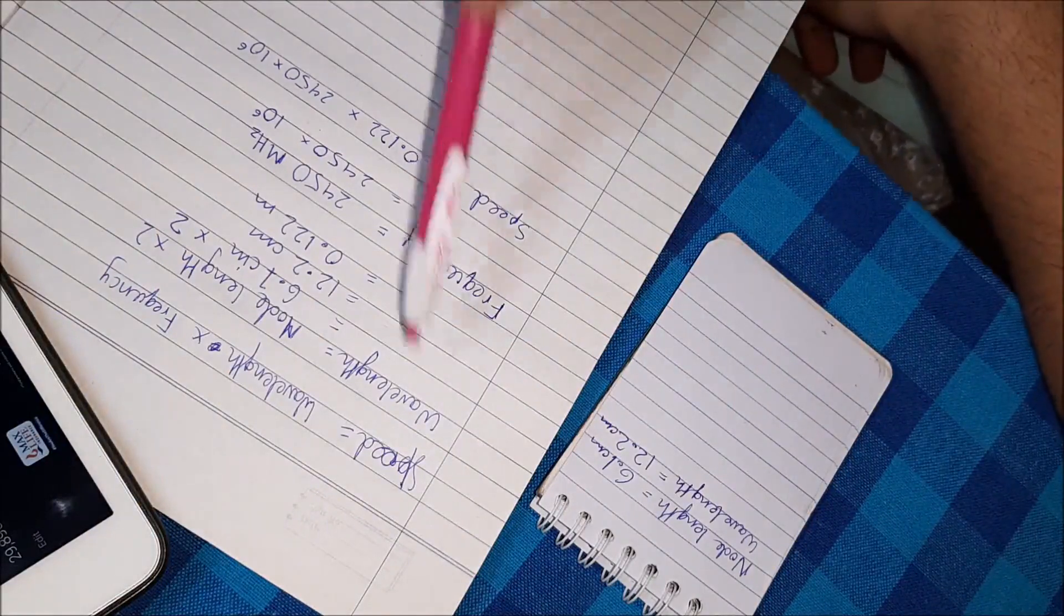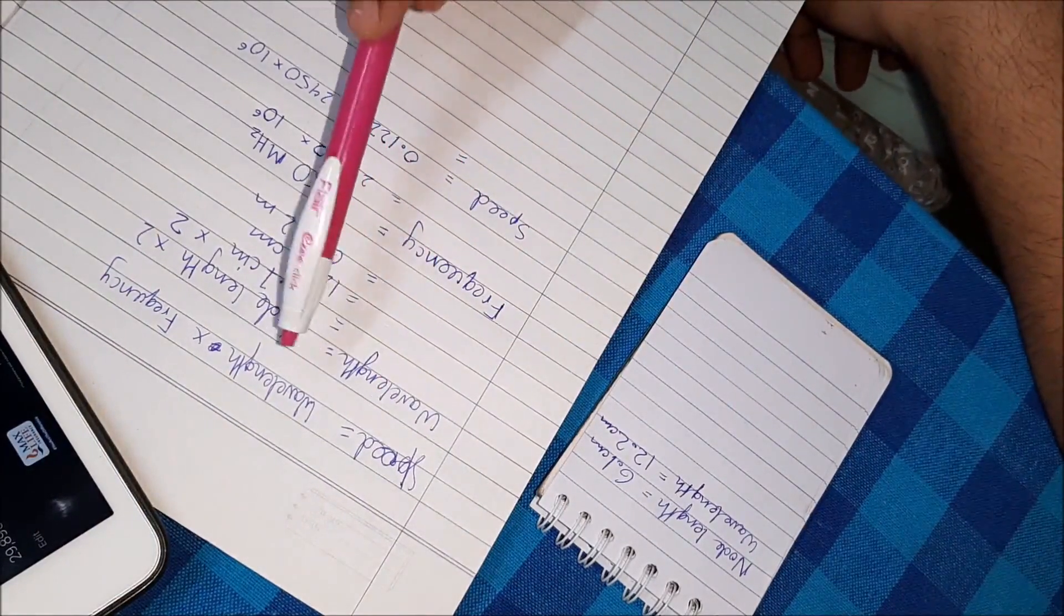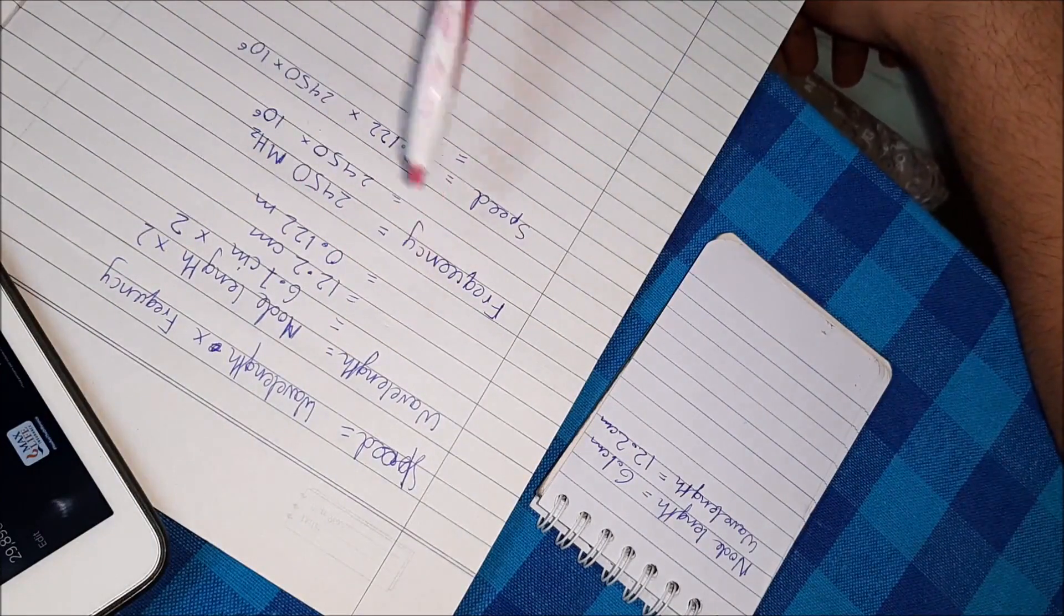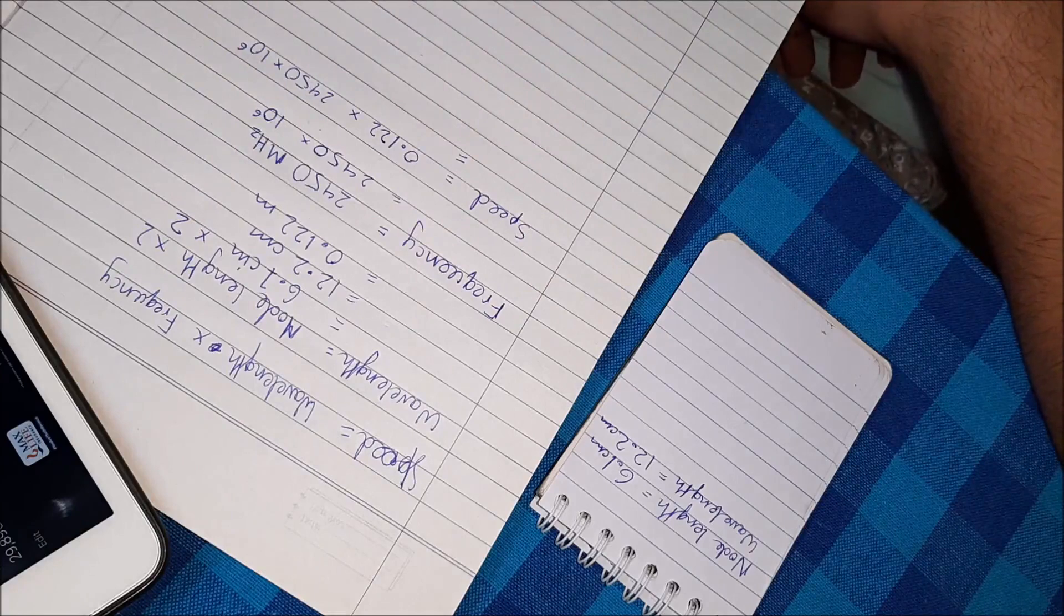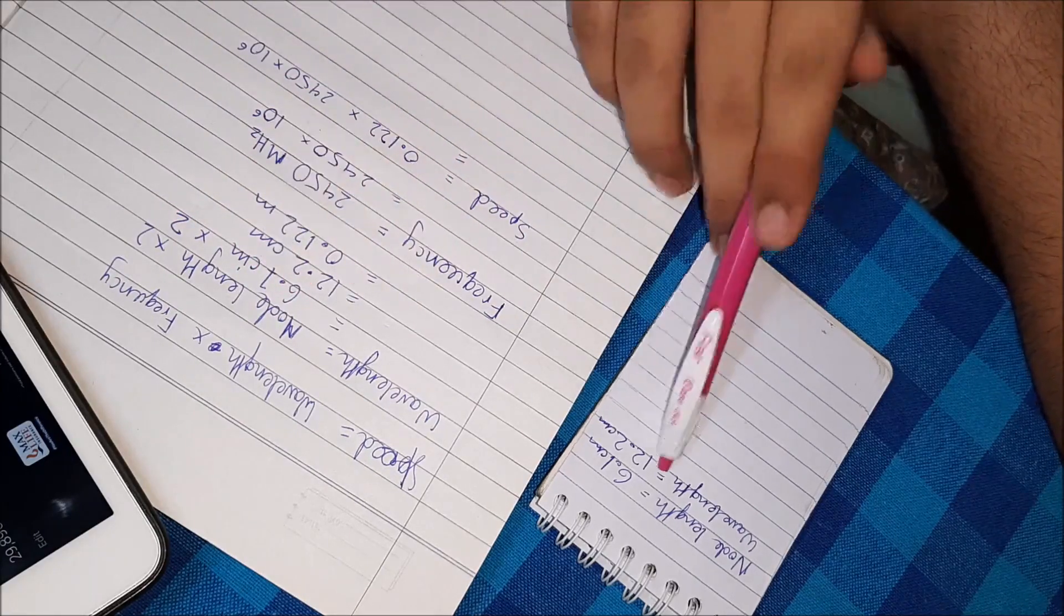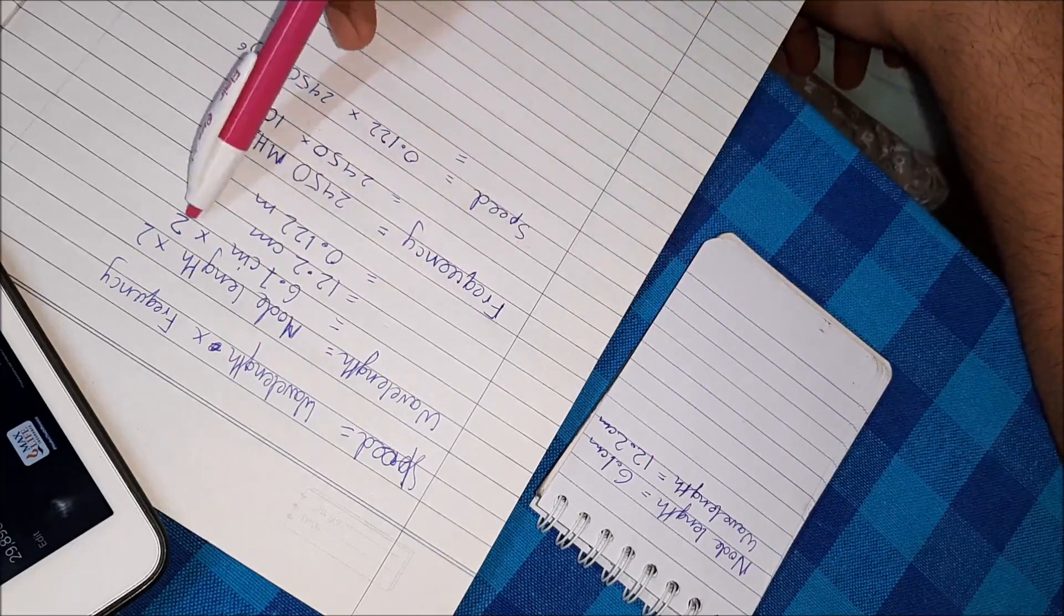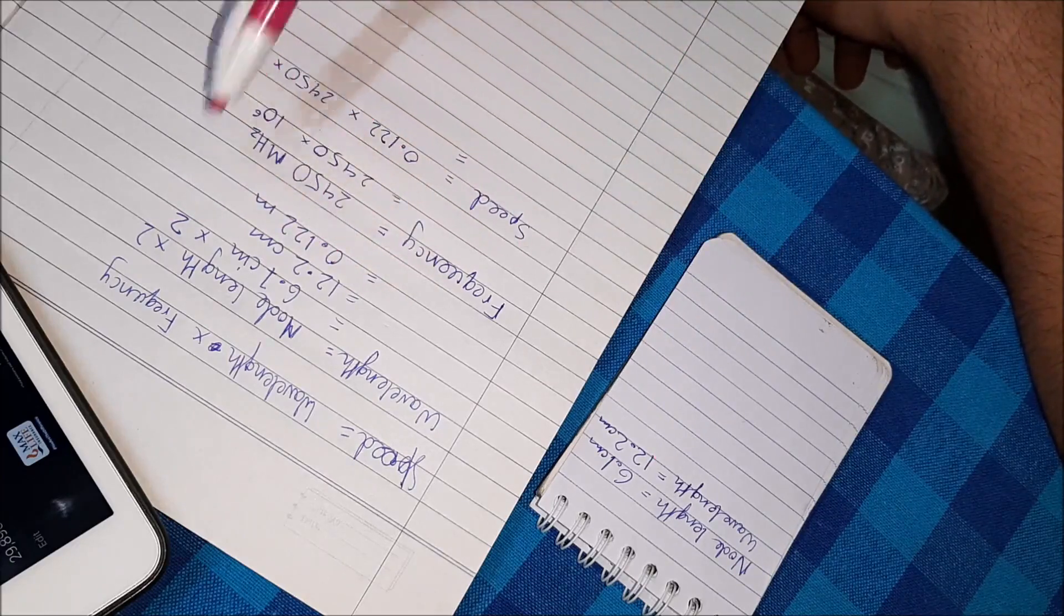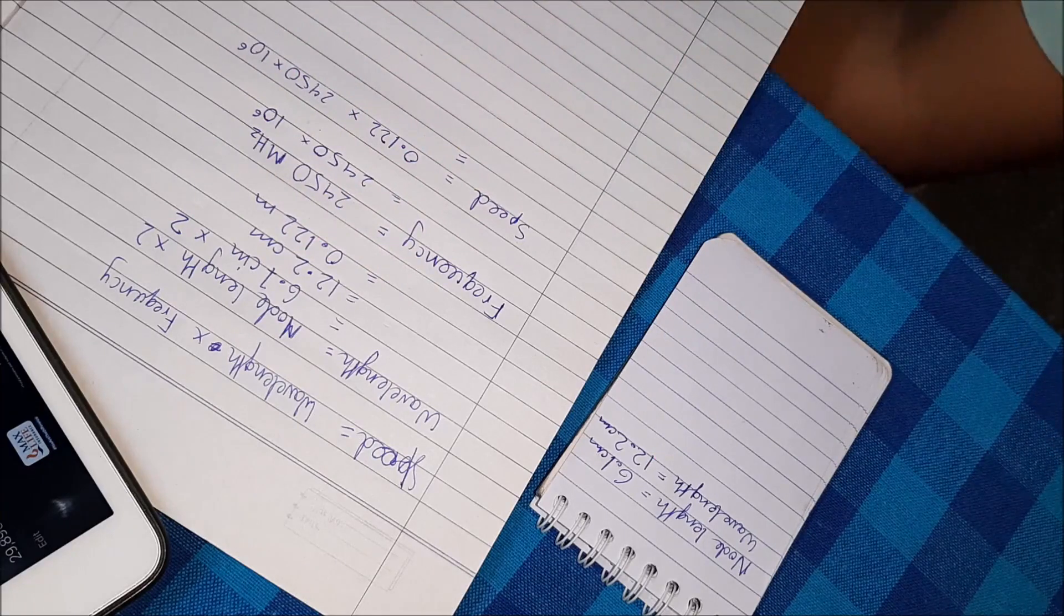So we know that speed is equal to the wavelength into the frequency. And we know the wavelength of our microwave by calculating the node length from our chocolate experiment. That's the node length into 2 which is 6.1 centimeter, we found that into 2, that's 12.2 centimeter or 0.122 meters. And the frequency which we found at the back of our microwave was 2450 megahertz.